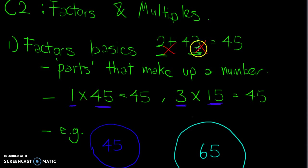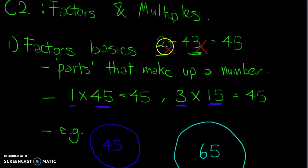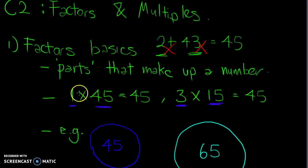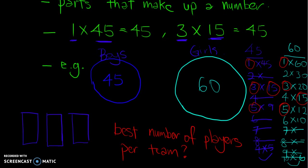For example, I cannot say that 2 plus 43 gives me 45, so 2 and 43 are factors — that concept is wrong. Factors only apply when numbers are multiplied together to give a certain number.